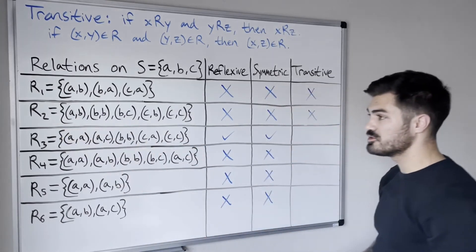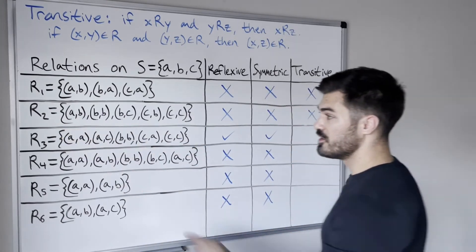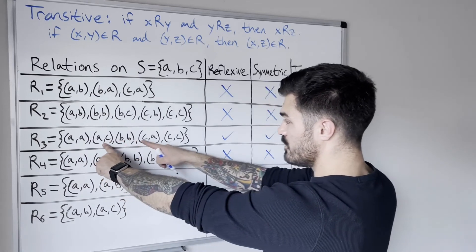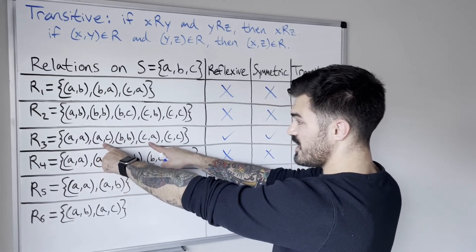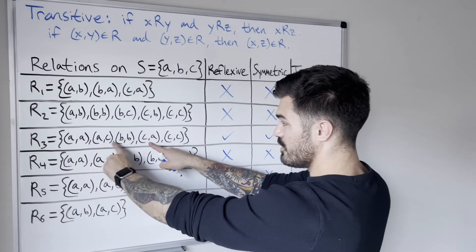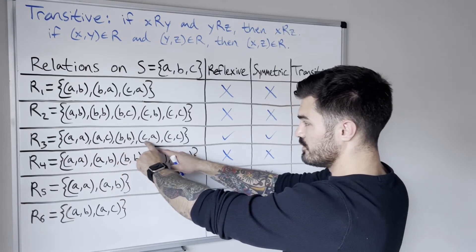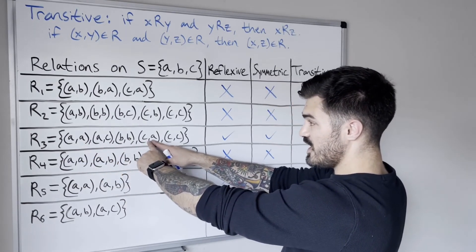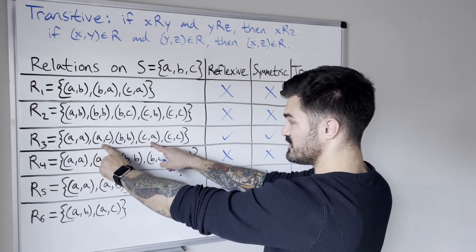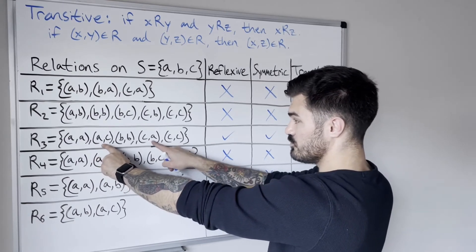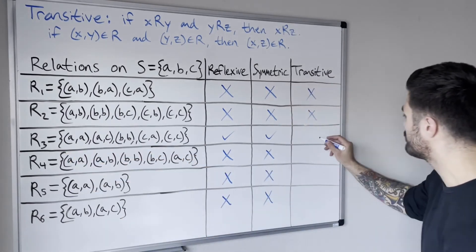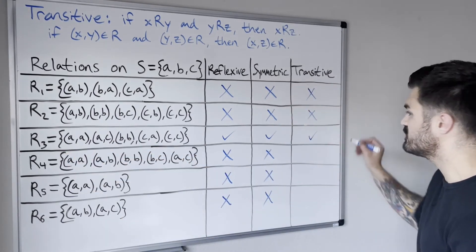Relation three: we have (A,C) and (C,A), so we need (A,A) — which we have. We have (C,A) and (A,C), so we need (C,C) — which we also have. After checking all pairs, relation three appears to be transitive.